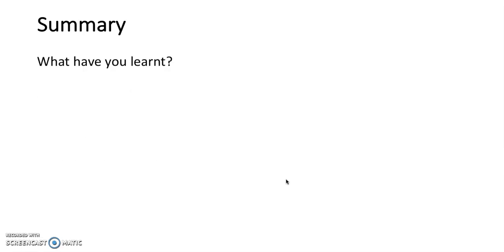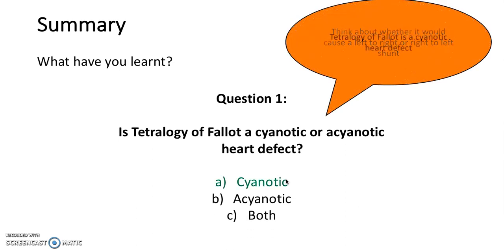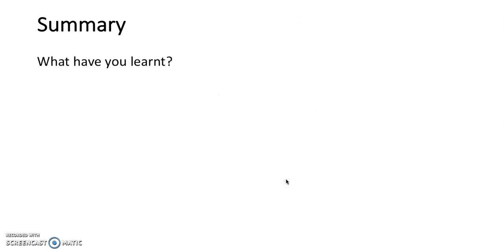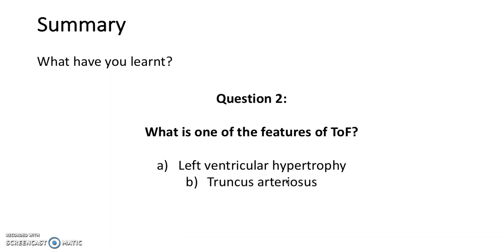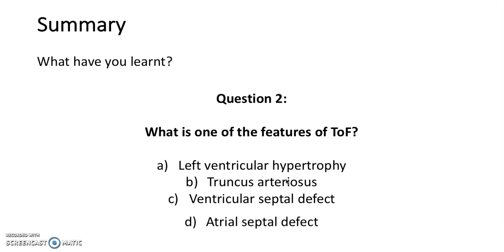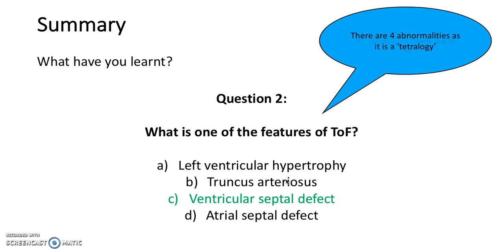In summary, we're going to go back over the multiple choice questions. Question 1: Is tetralogy of Fallot a cyanotic or an acyanotic heart defect? A, cyanotic; B, acyanotic; or C, both? It's cyanotic — remember, it's a right-to-left heart shunt. Question 2: What is one of the features of tetralogy of Fallot? A, left ventricular hypertrophy; B, truncus arteriosus; C, ventricular septal defect; or D, atrial septal defect? It's C, ventricular septal defect.